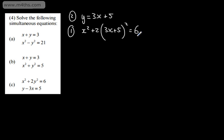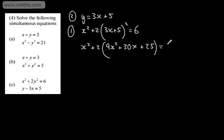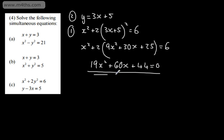By making y the subject and substituting in, we eliminate y and get an equation in x. Expanding carefully: x squared plus 2 lots of 9x squared plus 30x plus 25 equals 6. That gives 19x squared plus 60x plus 44 equals 0.